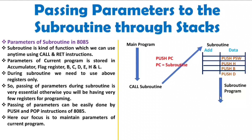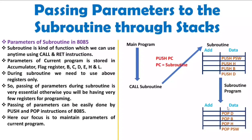Now I can write the subroutine program with all the registers available. Once you complete your subroutine, you will have to retrieve this data. For that, we need to execute POP instructions. You should be very careful — the stack operates as last in, first out. So when you do the POP operation, first do POP D so DE will be retrieved, then POP B so BC will be retrieved, then POP H so HL pair will be retrieved, and finally POP PSW so the accumulator and flag will be retrieved.